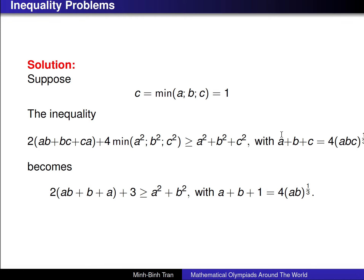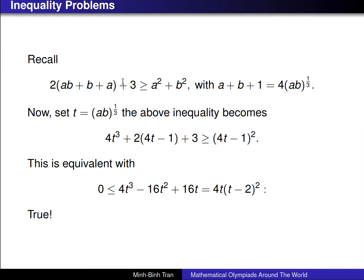The condition A + B + C = 4·(ABC)^(1/3), when C = 1, becomes A + B + 1 = 4·(AB)^(1/3). So after this substitution, we need to prove: 2(AB + B + A) + 3 ≥ A² + B², under the condition that A + B + 1 = 4·(AB)^(1/3).